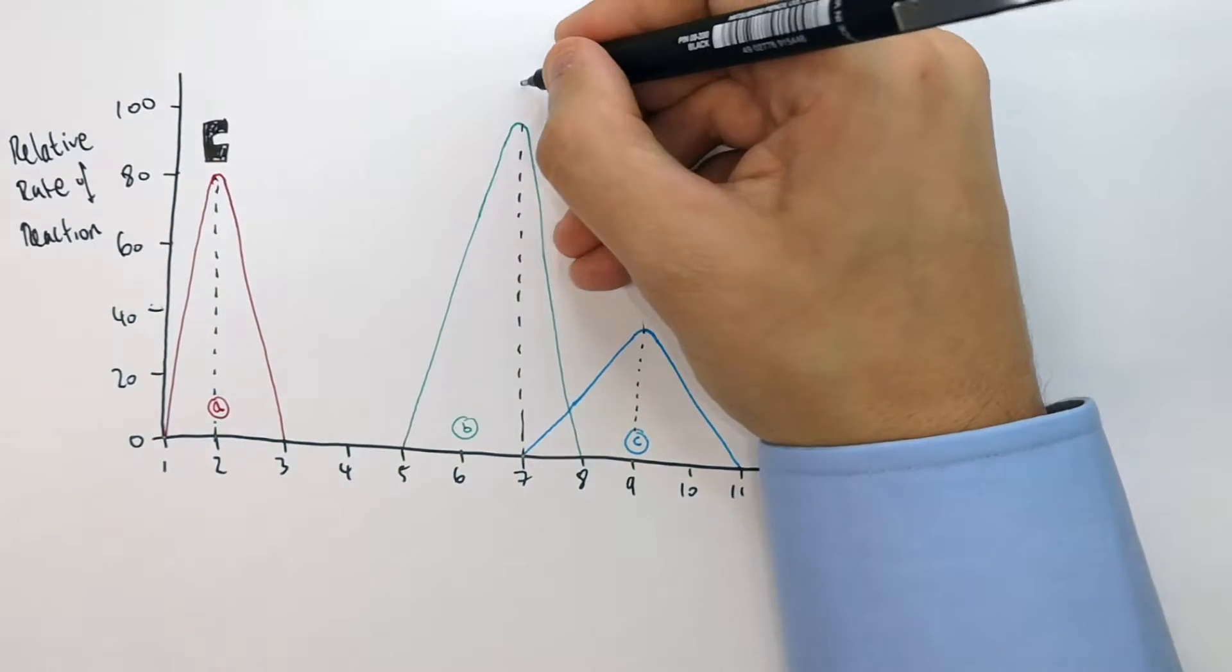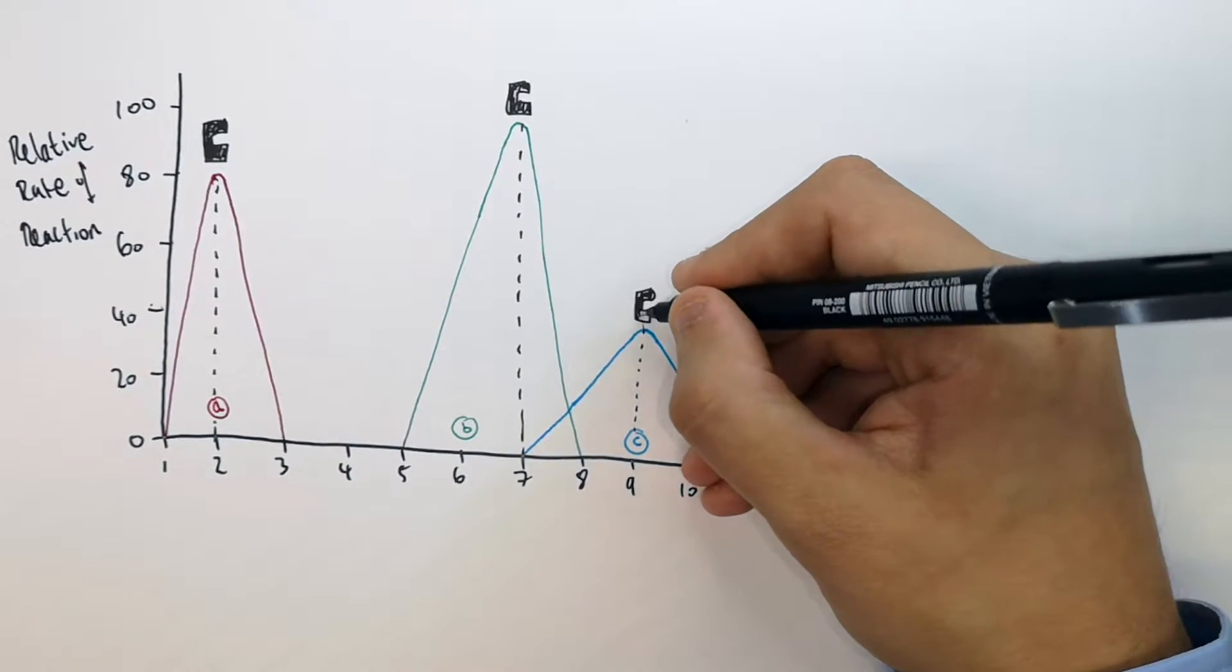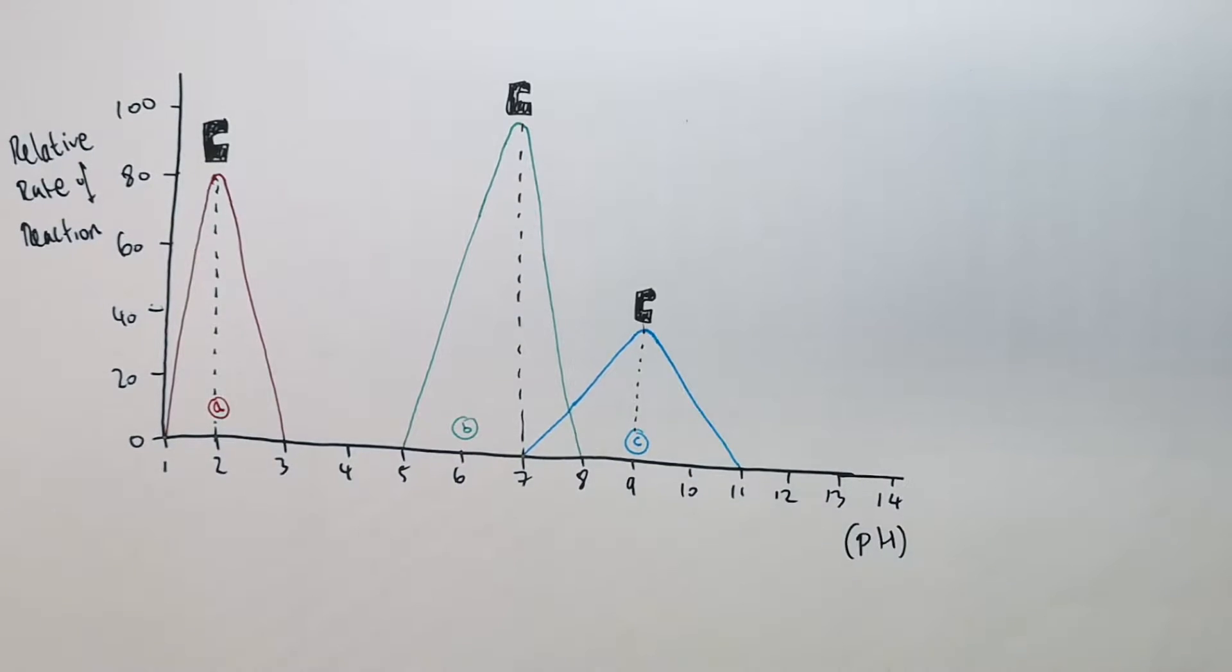At these three pHs, the enzymes' active sites have not denatured. They are working and breaking down substrate at their peak rate.